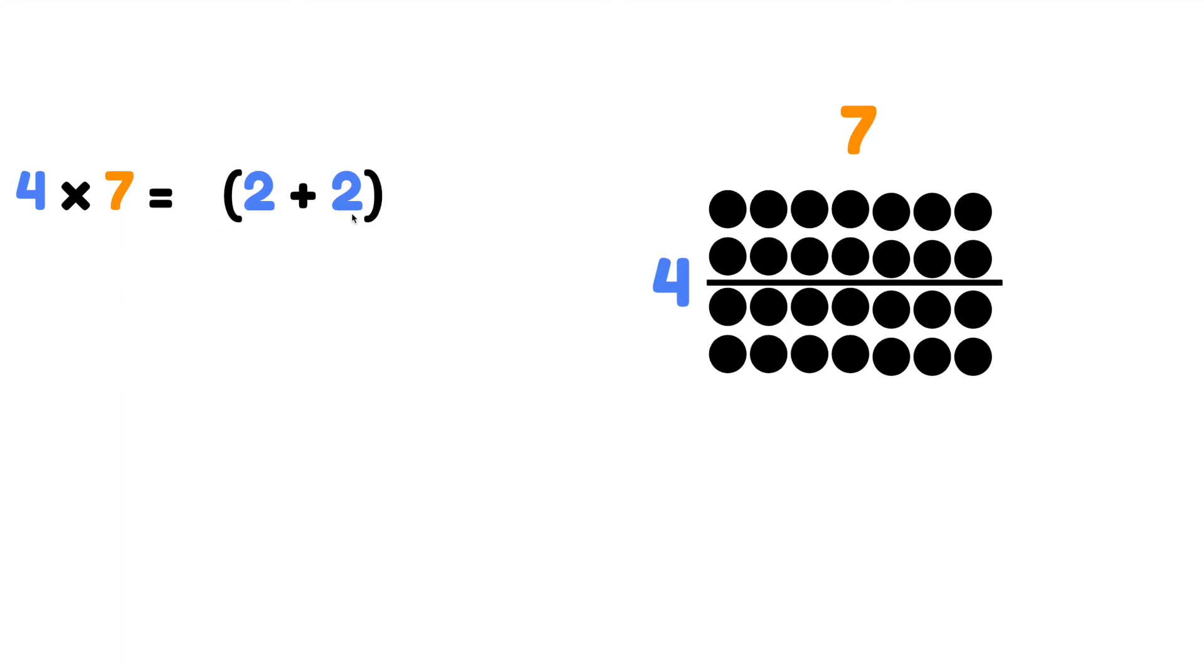So 2 rows plus 2 rows. Now we are going to multiply that by 7 because each of those rows has 7. So on top we have 2 rows of 7.